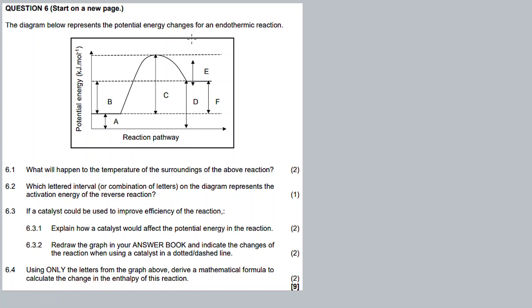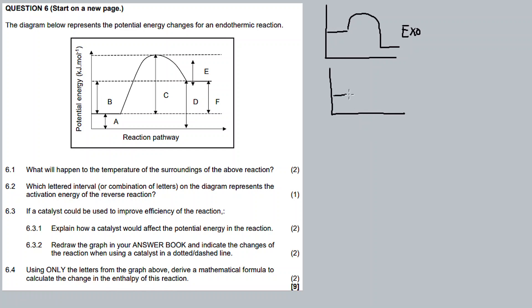For question 6, we have a chemical change based on a potential energy graph. The diagram below represents the potential energy changes for an endothermic reaction. We know that there are two types of reactions: the exothermic and the endothermic. For the exothermic reaction, the reactants have higher energy than the products.